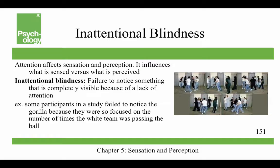Inattentional blindness is a failure to notice something that's completely visible because of a lack of attention. In a famous study, participants monitored how often the white team passed the ball, and a gorilla walked right through the visual field, clearly visible for nine seconds. A number of participants failed to notice the gorilla because they were so focused on counting the passes.